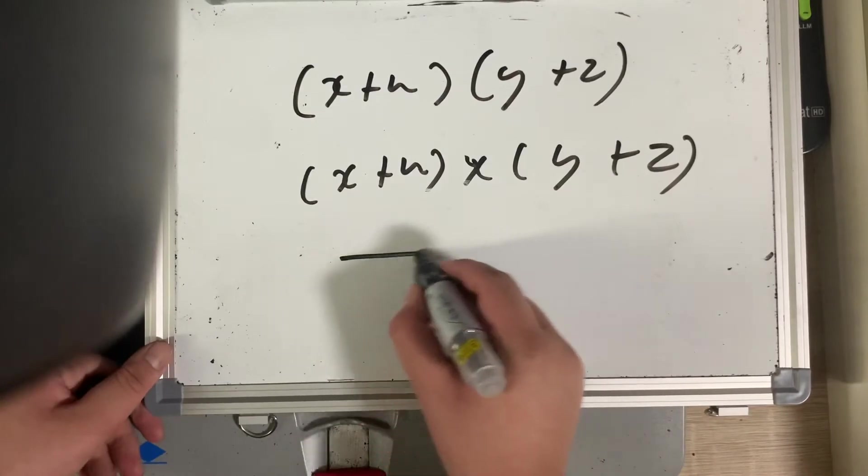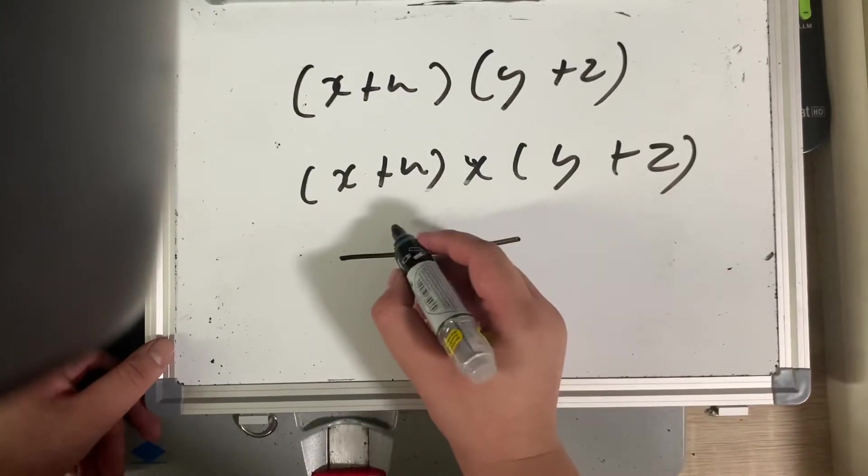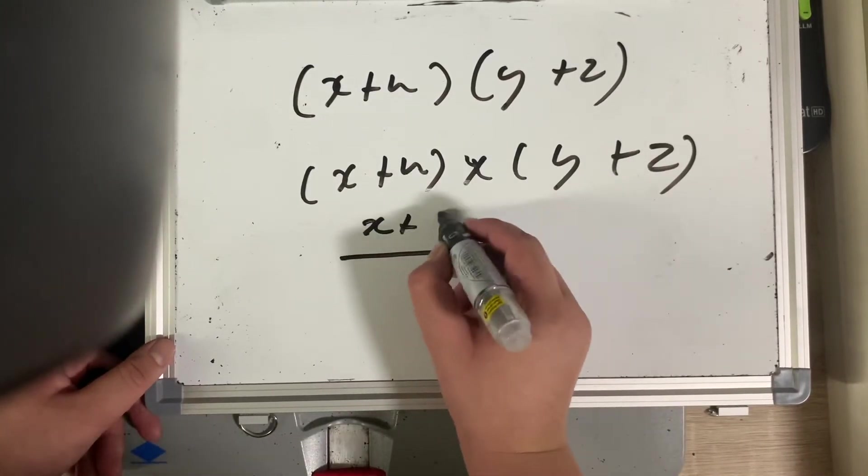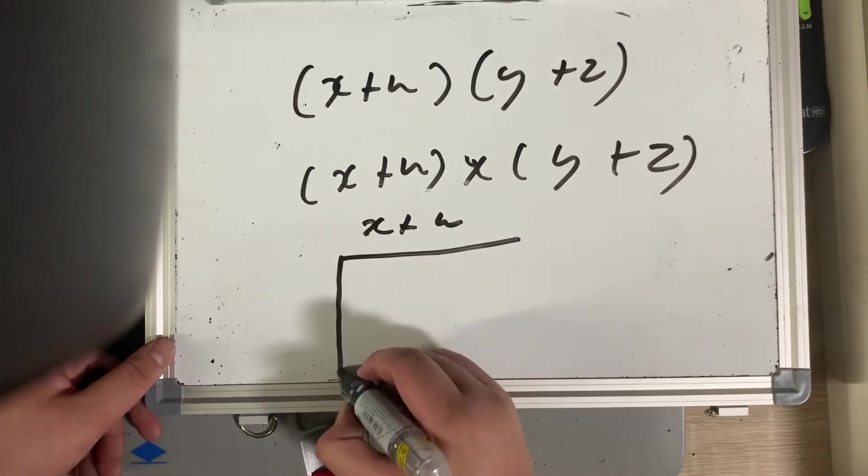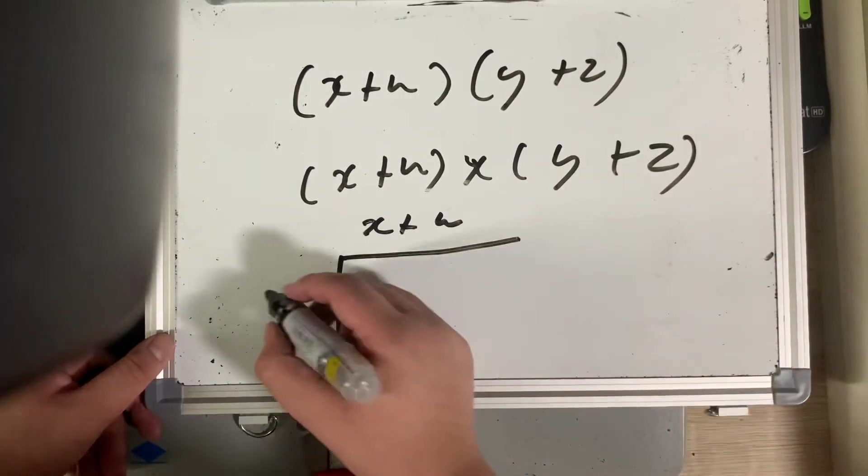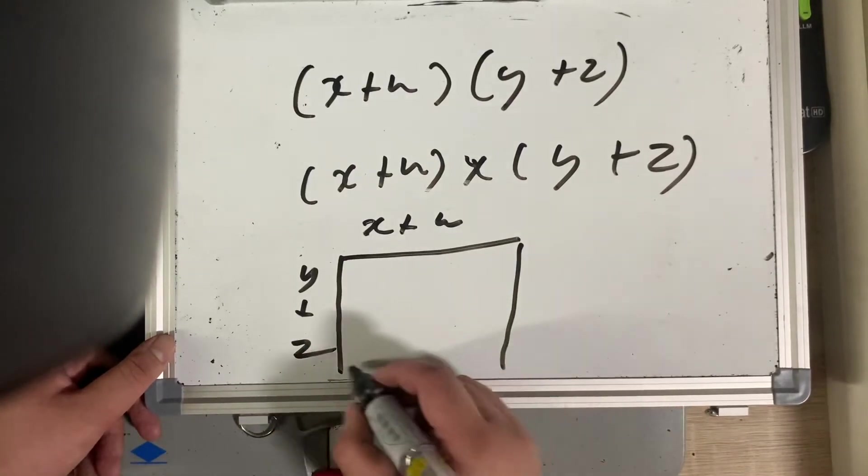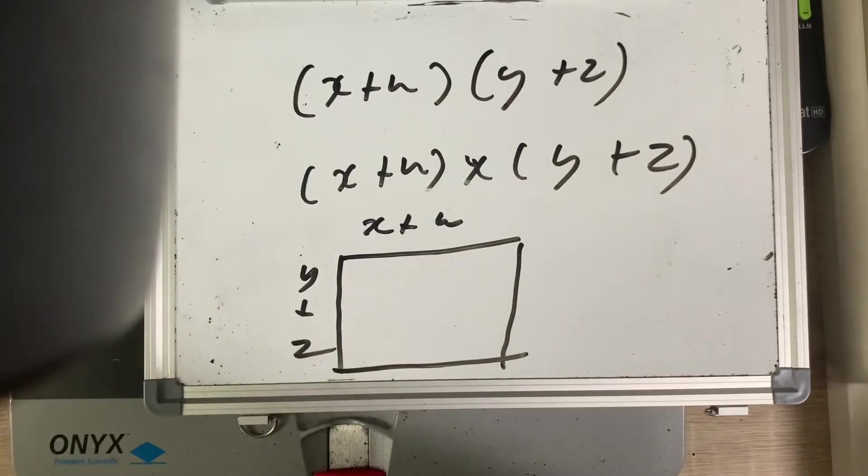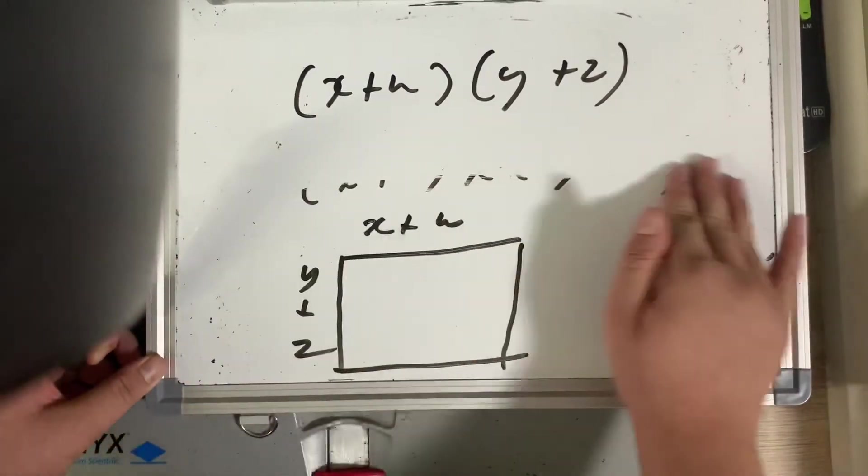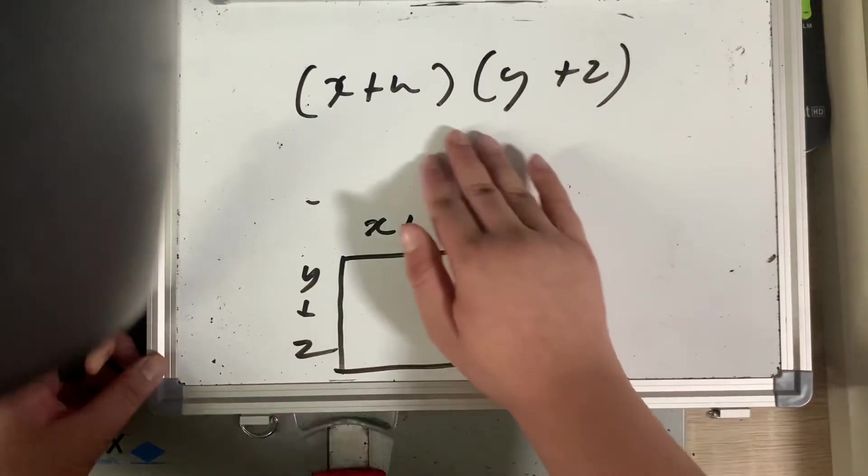Why don't we make an area with both of these numbers multiplying to each other. First, we create a rectangle of length x plus w. Then, the other side, the height, would be y plus z. Now we have it here, now we have this one.